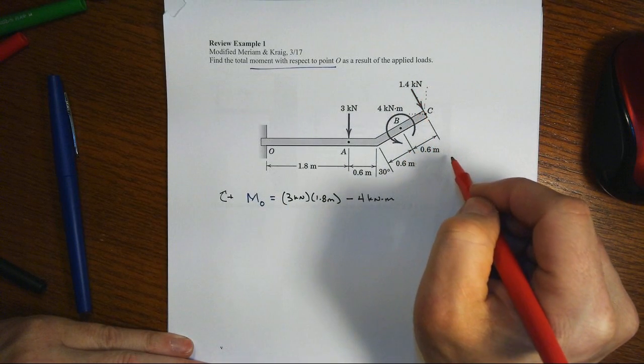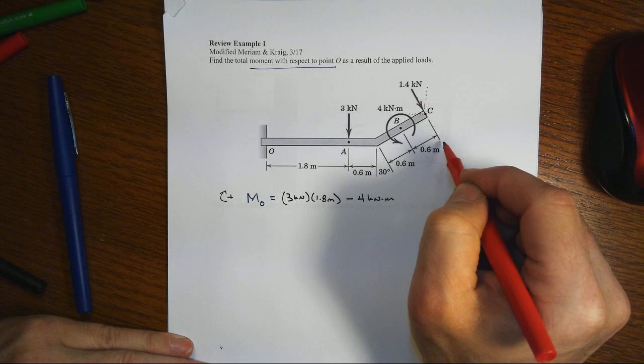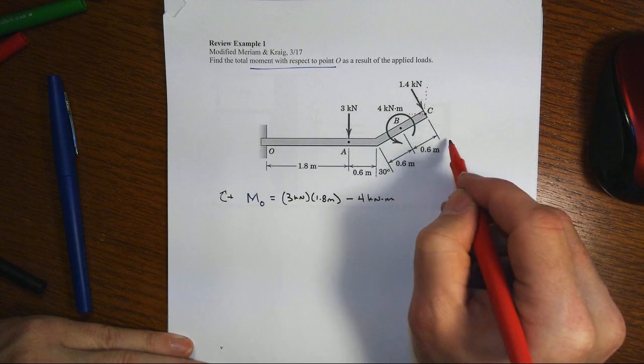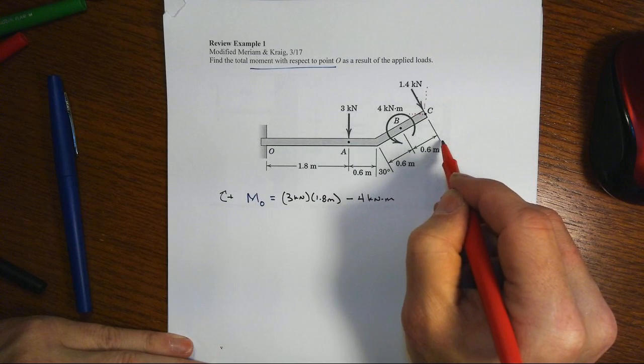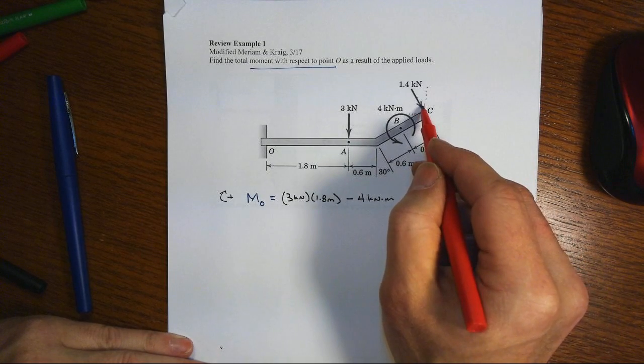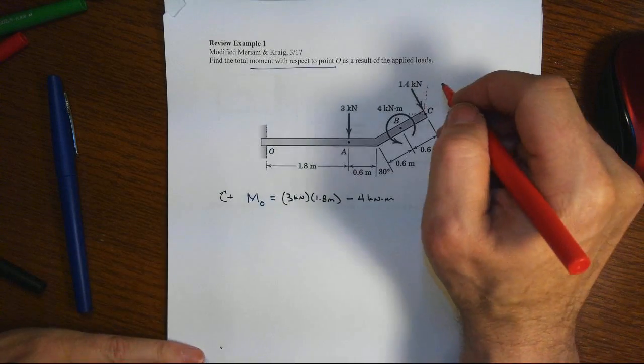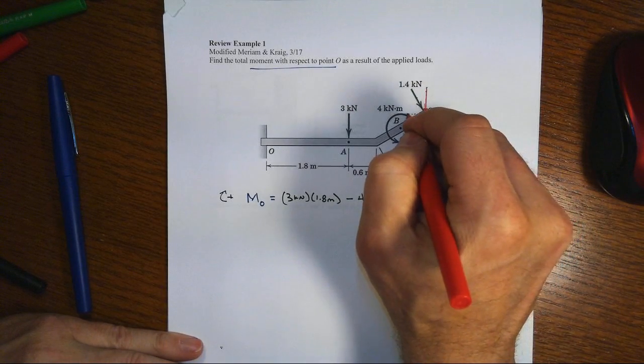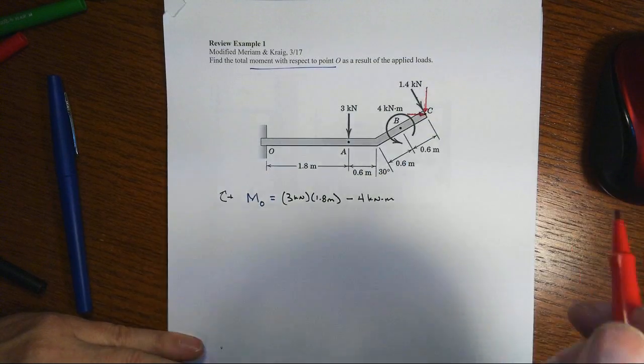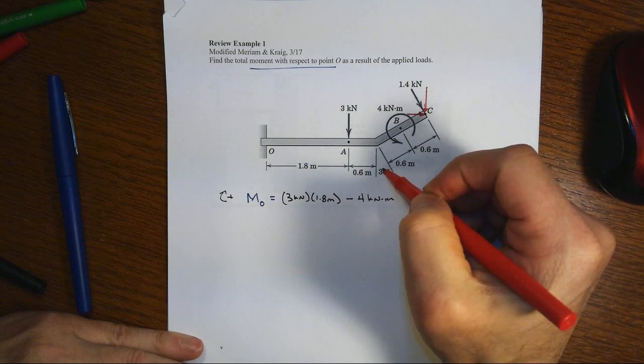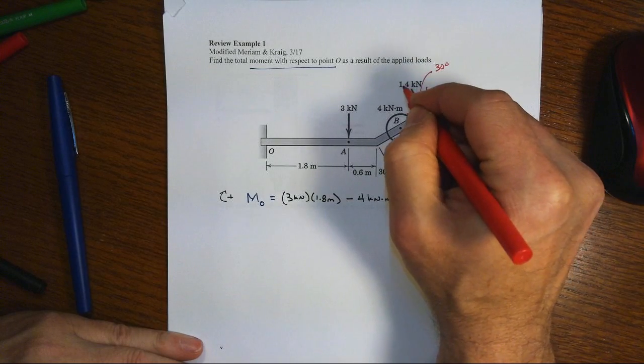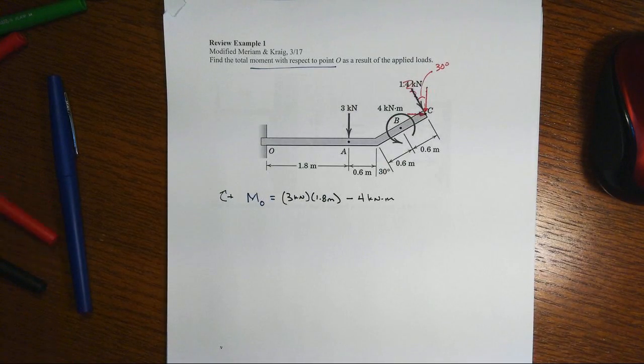We could slide the force along its line of action to some other more convenient location, maybe where it intersects with this horizontal that would pass through O and A. Or we could find an equivalent - oh wow, we've got a lot of options. Why don't we just go ahead and resolve this into two different X and Y component forces. There's a 30 degree angle at stake here, and that means we'll wipe out that one.